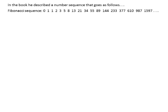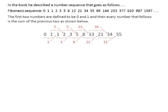0, 1, 1, 2, 3, 5, 8, 13, 21, 34, and so on. The first two numbers are defined to be 0 and 1, and then every number that follows is the sum of the previous two, as shown below.